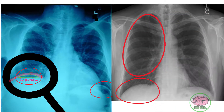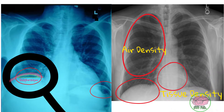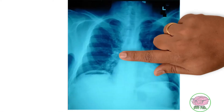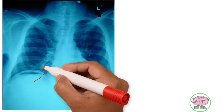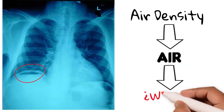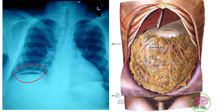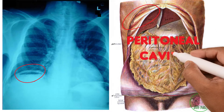Looking at the lung, it is also black — this is the air density on an x-ray. By looking at the heart, which is white, this is the tissue density. Therefore, the black image below the diaphragm is of air density, located right between the liver and the diaphragm in the peritoneal cavity.